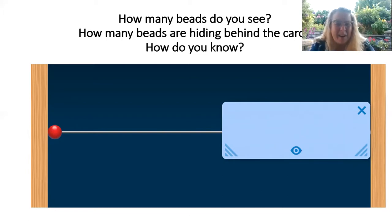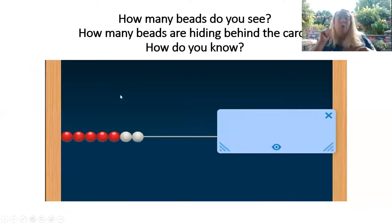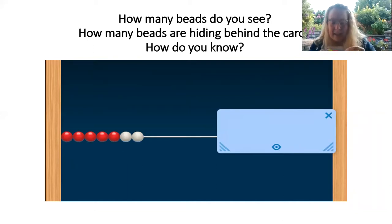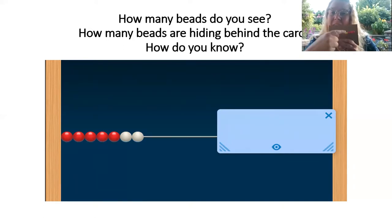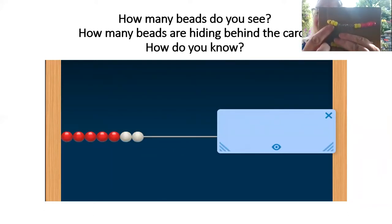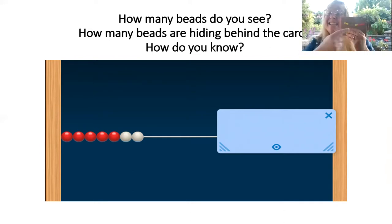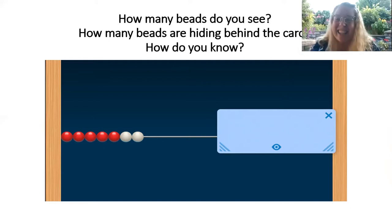Okay, are you ready for the next one? Let's see if we can do it a little bit faster this time. How many beads do we see? This one's a little harder. Let me make my number rack — five and two. How many beads do I see? Seven. So how many beads are hiding behind the card? Three. Seven and three make 10. I love it. That was a good one. Let's do the next slide.